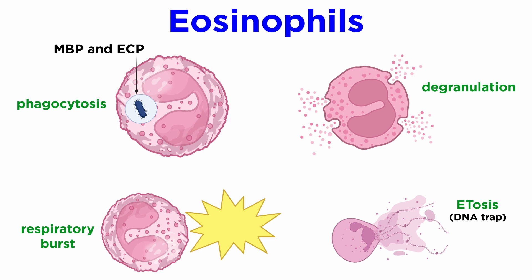Like neutrophils, eosinophils undergo extracellular DNA trap formation in a generalized process. Degranulation in eosinophils is tightly regulated and can be delayed until intact eosinophil granules are able to disassemble under inflammatory stimuli.